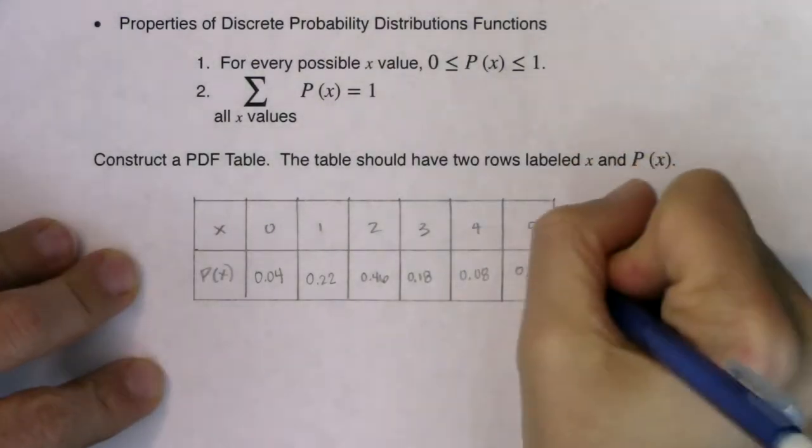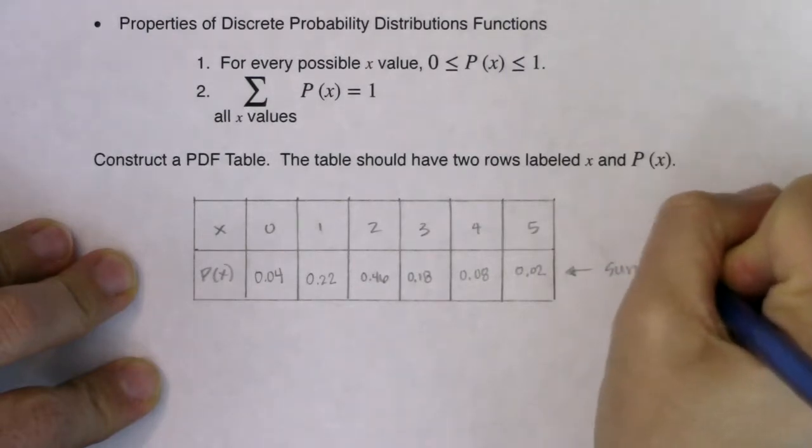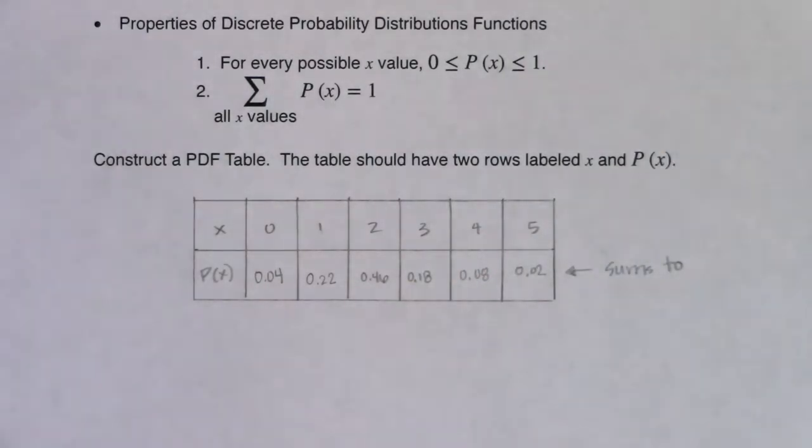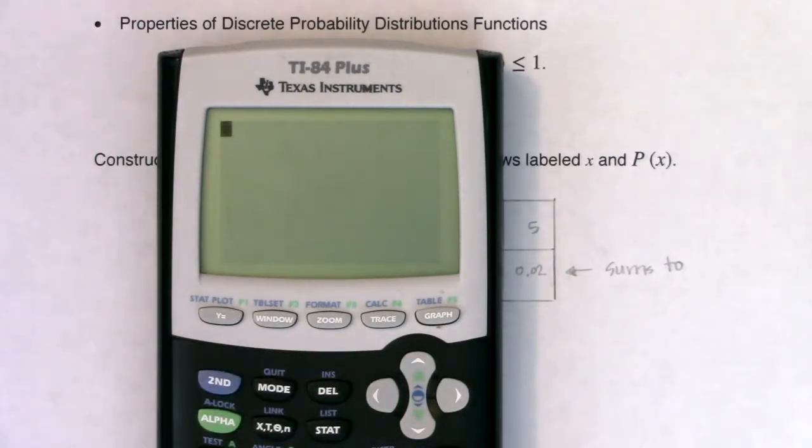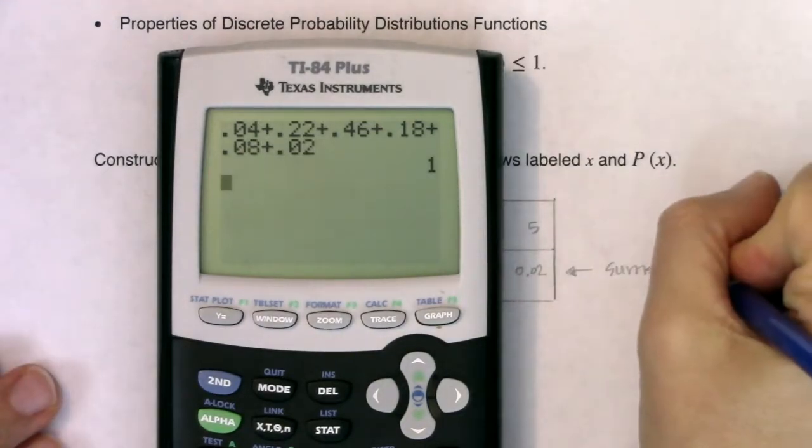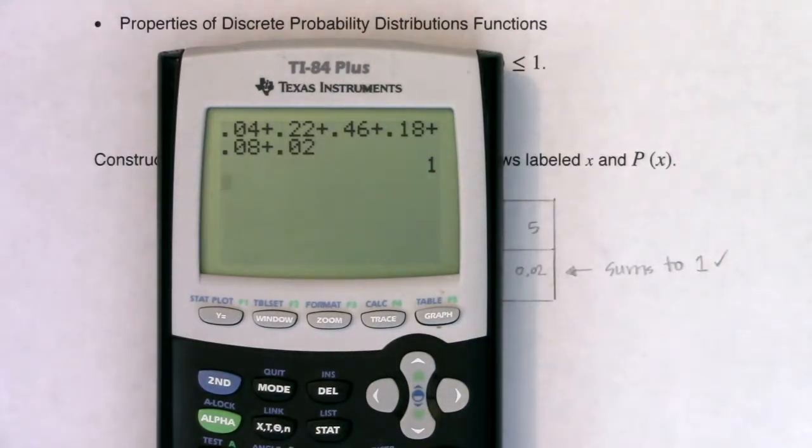Let's just do a quick check. What do these sum to? If you remember from chapter one, there's a very specific number that these probabilities should sum to. I'm going to add these numbers on my calculation screen initially, and then I'm going to show you how you can add all the numbers on a list with the calculator command. When I hit enter, I get one. Fantastic. It absolutely should sum to one or 100%.